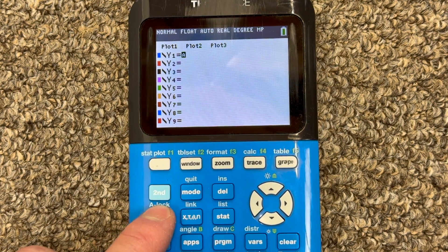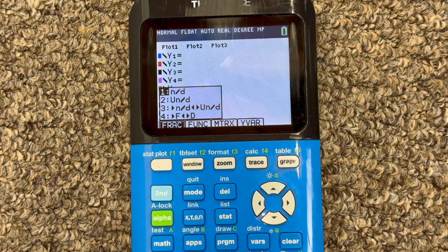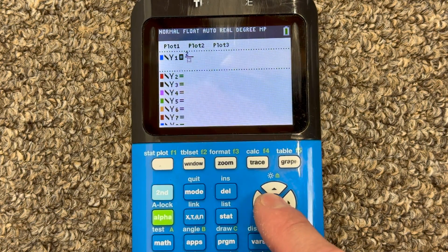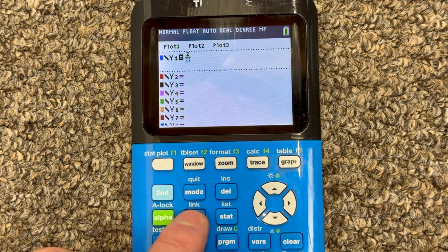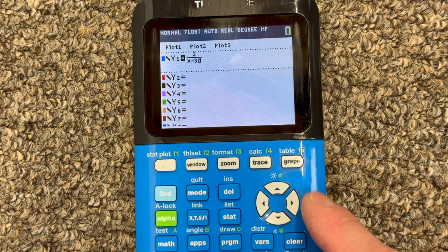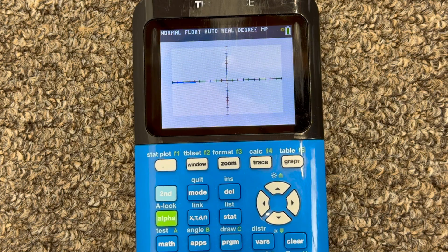We can go again, alpha Y equals, enter for numerator and denominator. And we're just going to say two divided by X minus three. And let's go ahead and graph that. So this is just a rational function.